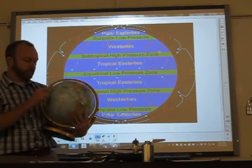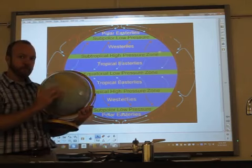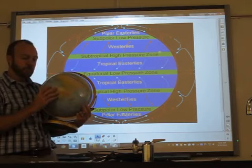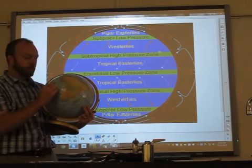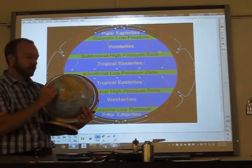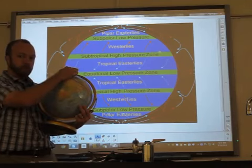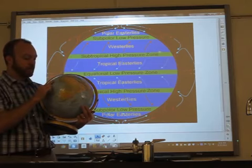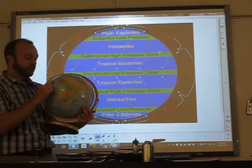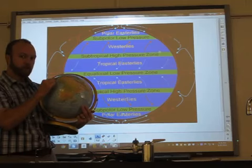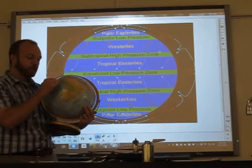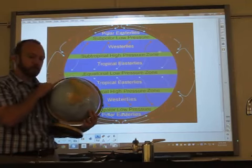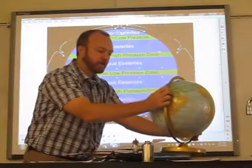I want you to notice, though, that as the earth moves in a circle, the equator has to go a greater distance than the poles. So the equator is moving faster than the polar regions. Now that means that the air near the equator is moving faster than the air away from the equator. The air away from the equator is moving slower than the air closer to the equator. So how does that affect the wind?